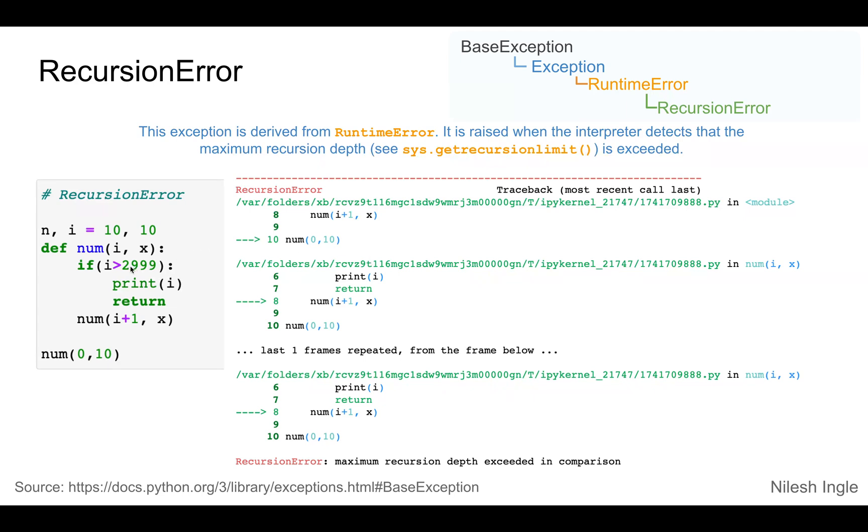You could try changing this number 2999 to a smaller number and you'll see that it will run for a while. After the recursion limit is reached, it will throw this error.